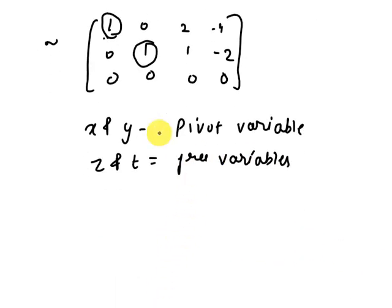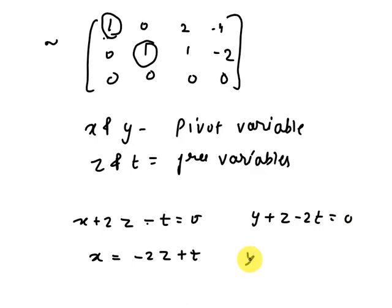Now by solving the pivot variables in terms of free variables, we get X plus 2Z minus T equals 0, which implies X is equal to minus 2Z plus T. And here we get Y plus Z minus 2T equals 0.